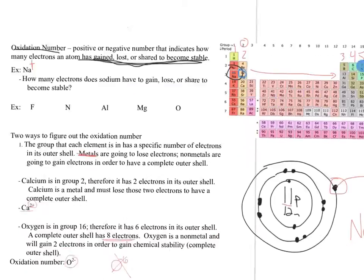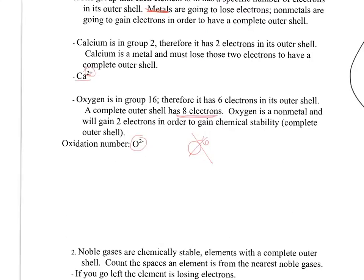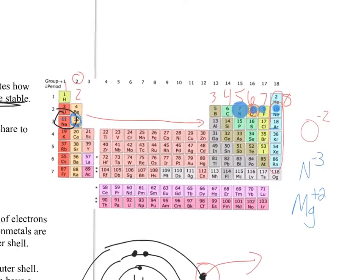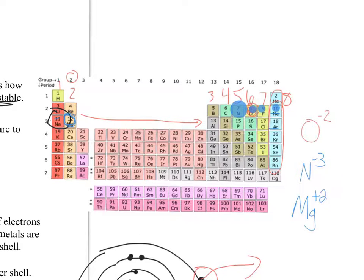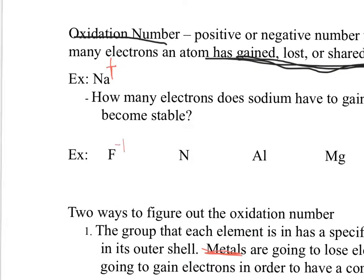That's all you're doing to figure out the oxidation number: count to the nearest noble gas. For non-metals, count forward — how far away am I? That's your oxidation number. For fluorine, it's one space away from neon, so its oxidation number is negative one. It's not negative seven — it's not how many electrons it has, it's how many it needs to complete its outer shell.